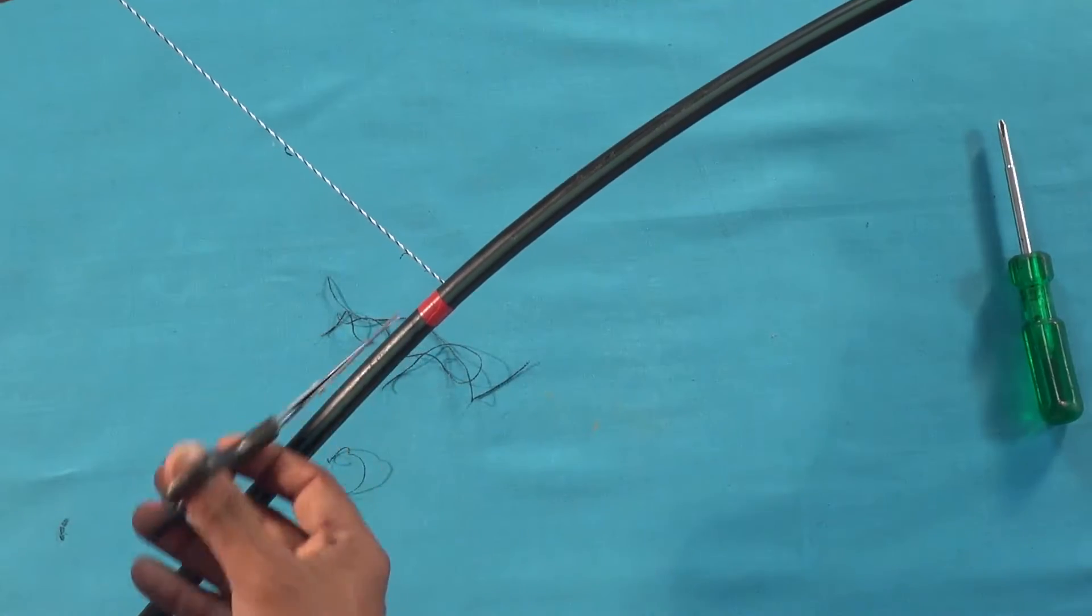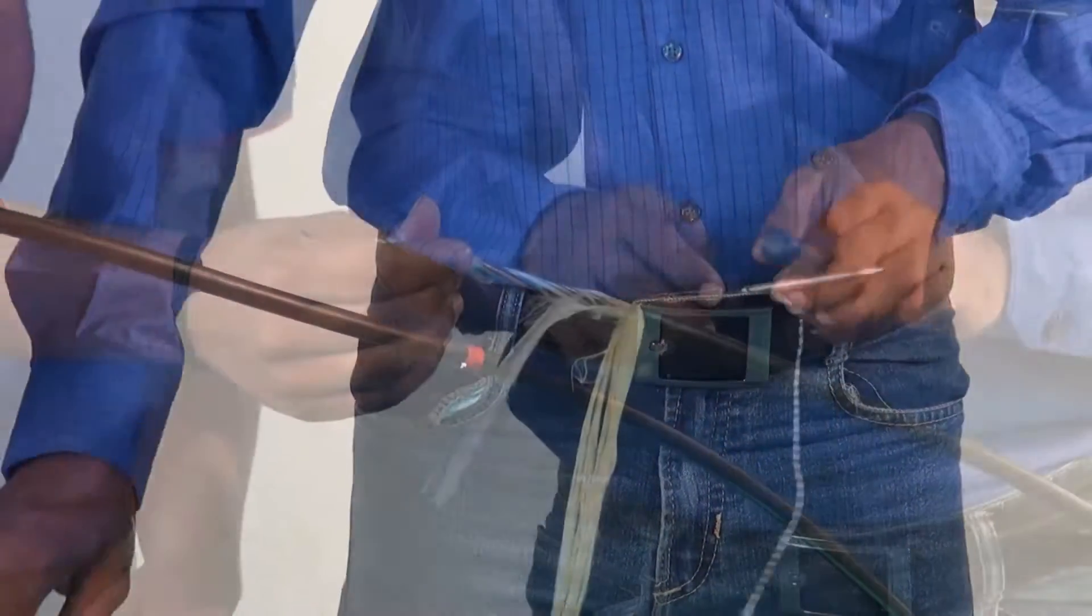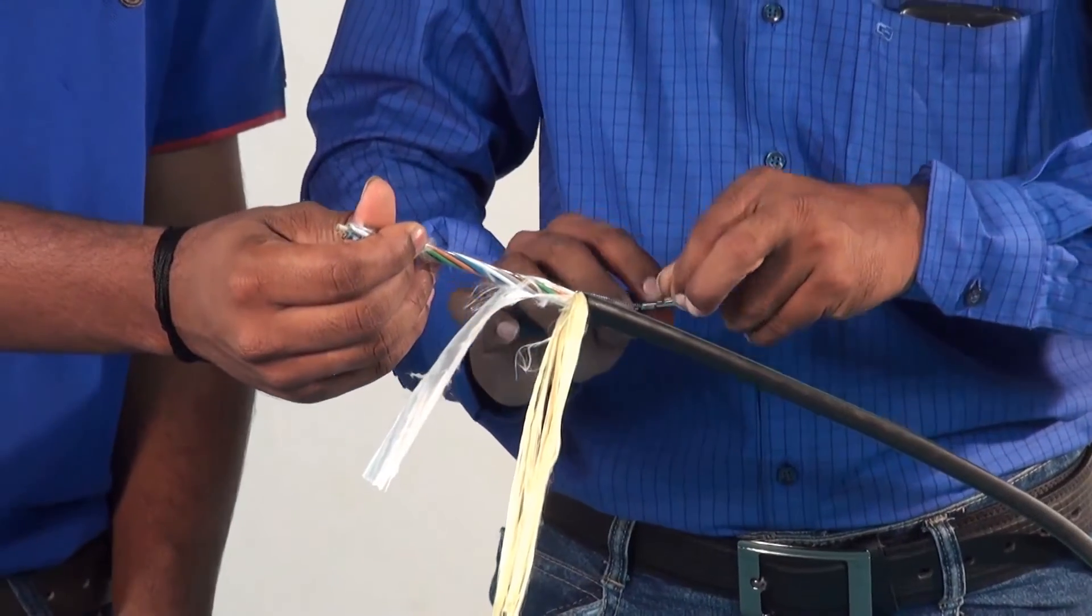Cut the ripcord using a scissor. Repeat this process on the other side of the cable.